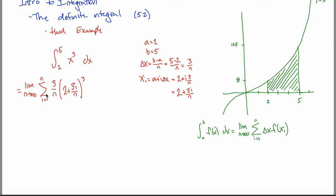It's an ugly limit, but we can chip away at it. Each of these n terms looks exactly the same except for the i. The first term would be 3/n times (2 + 3·1/n) cubed, the second term would be 3/n times (2 + 3·2/n) cubed — the only thing that changes is i. Everything else is a constant. It's a little hard to factor constants out right now because they're hidden inside this cube, so we're going to expand out these parentheses. It's an algebraic nightmare, but we can do it. Expanding out this polynomial is messy enough that I want to do it off to the side.